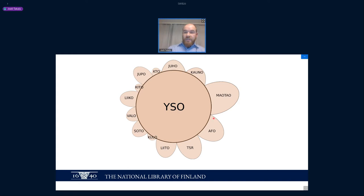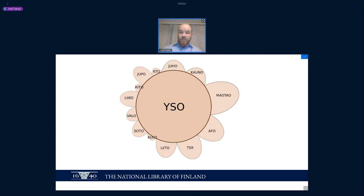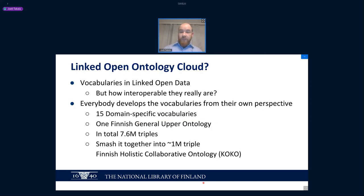This is also how they overlap in the Finnish holistic ontology KOKO. About half of each vocabulary is considered to be the YSO structure and the rest is unique to each. The individual domain vocabularies are not supposed to overlap much with each other — they are mainly designed to overlap with YSO. This is for ease of keeping each controlled vocabulary separate and knowing how to address each concept when combining them.